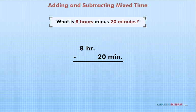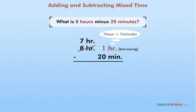But we cannot subtract 20 minutes from nothing, so we need to borrow. Notice, though, that we are borrowing one hour and bringing it over to the minutes column. That means we have to think, one hour is how many minutes? 60.